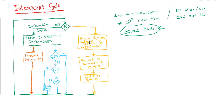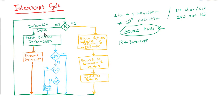In the interrupt cycle we have a flag called R, which represents the interrupt. The type of execution is decided based on the value of R. By default, if there is no interrupt, it will go to the left side which is the instruction cycle. The first step in the instruction cycle is fetch and decode instruction, corresponding to timing signals T0, T1, and T2.